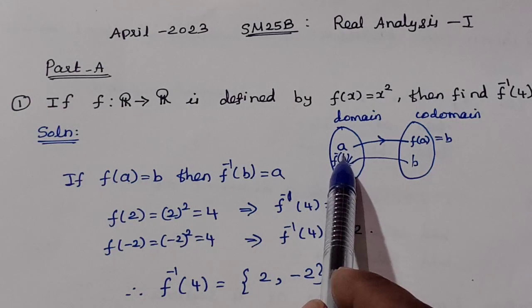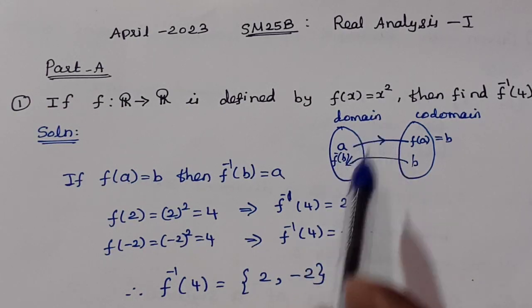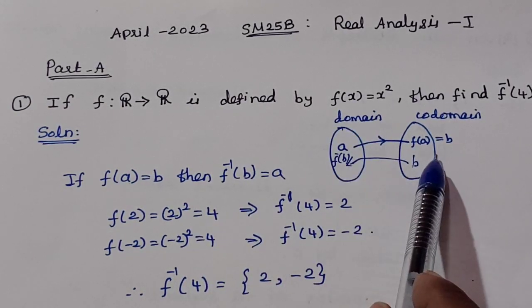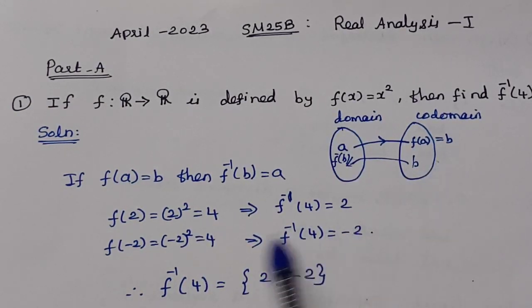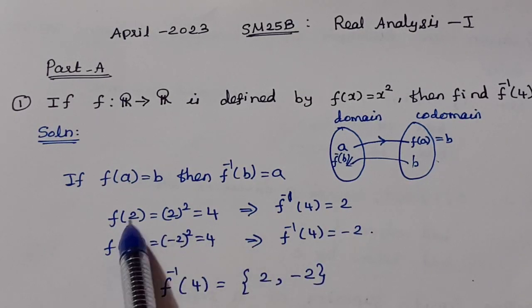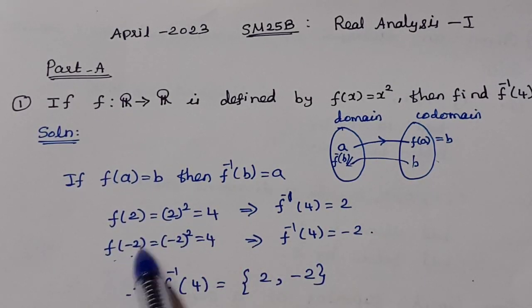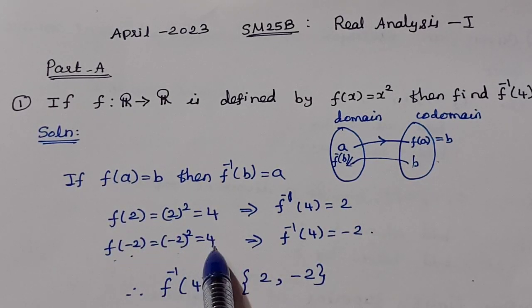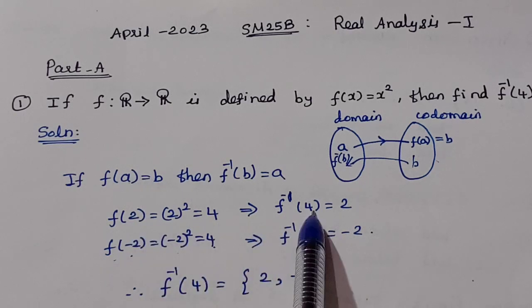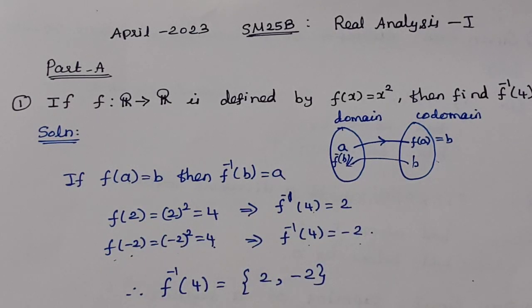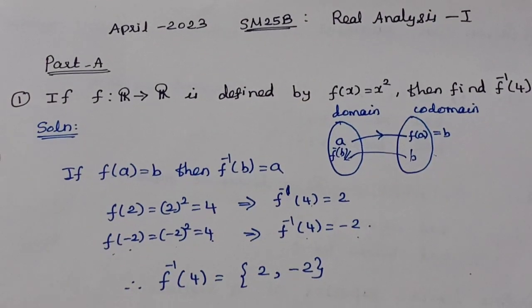Substituting x to get 4: f(2) = 4 and f(−2) = 4. Therefore, f⁻¹(4) = {2, −2}.